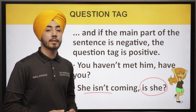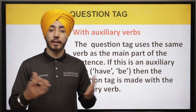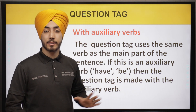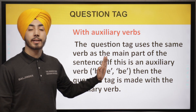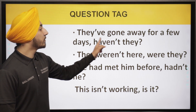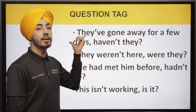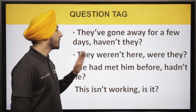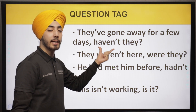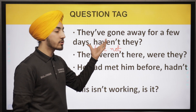The next rule is about auxiliary verbs — verbs like 'have' and 'be'. Wherever we use 'have', 'be', 'were', 'is', or their alternative forms in our sentence, the question tag is also derived from that same auxiliary verb. For example: 'They have gone away for a few days' — the question tag uses 'have', so we say 'haven't they?' — 'have not they' contracted to 'haven't they'. Another example: 'They weren't home, were they?' — the sentence uses 'were', so the tag also uses 'were'.